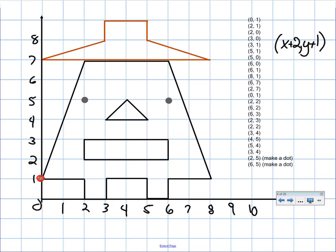If you apply the rule x plus 2, y plus 1, 0, 1. So, let's add 2 to the x, 2. Remember, this is always written as x, y. Add 1 to the y, so 1 plus 1 is 2, 2, 2.